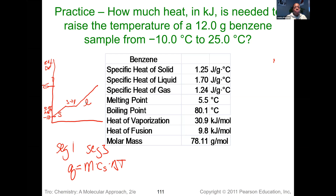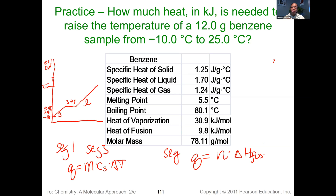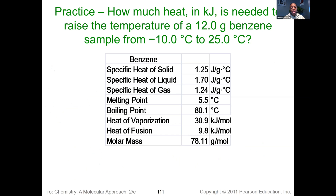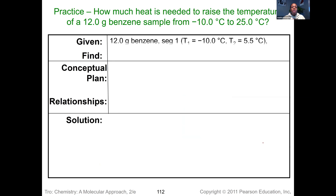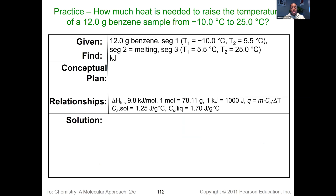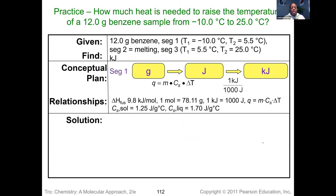For segments one and three — the linear portions — we use heat equals mass times specific heat times delta T, making sure to pick the right specific heat and use only the temperature change for that particular segment. For segment two, the plateau region, we take the mole amount of the substance times the heat of fusion — selecting fusion, not vaporization, because we're going from solid to liquid. That is the melting process. After mapping it out, it's a matter of doing the calculations.